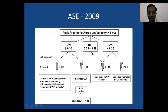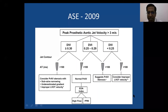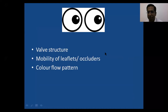A particularly useful illustration from the 2009 American Society of Echo guidelines starts by assessing jet velocity, then the Doppler velocity index, then jet contour shape, leading to different diagnostic possibilities. We will use this algorithm with several cases. Before getting anxious about reporting, approach it systematically as you would any echo.